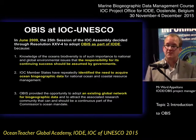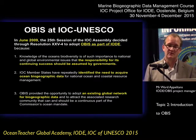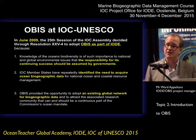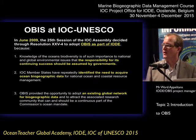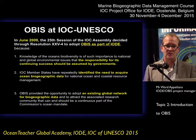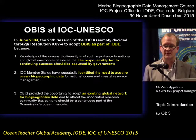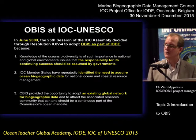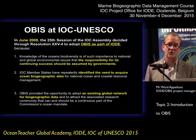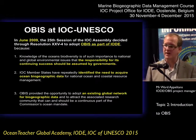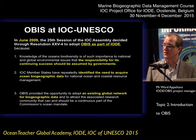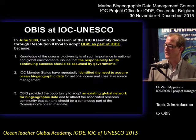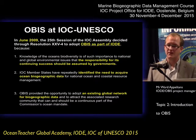And that was mainly because of three points. They all agreed that the knowledge of ocean biodiversity is so important for national and global environmental issues. That the responsibility for OBIS's continuous success should be assumed by governments. And IOC was very strong in physical, climate and chemical data, but there was a gap in biology, so they required ocean biogeographic data to be added. And IOC didn't need to start from scratch — there was the opportunity to adopt OBIS as an existing global network and associated research community.